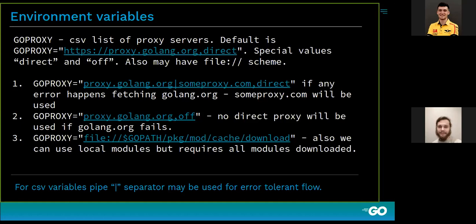GOPROXY configures a list of possible proxies to verify and fetch the code. Proxies are used in the order they are mentioned in the list. So the first one, like proxy.golang.org in this example, will be used first to fetch the module data. If that proxy fails, we use some-proxy.com, and only after that fails do we use the special value 'direct'. Direct means we work directly with the version control system without any Go proxy protocol.